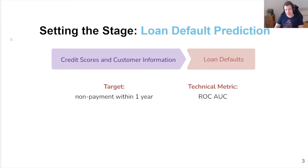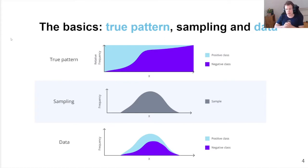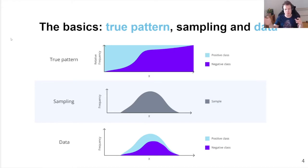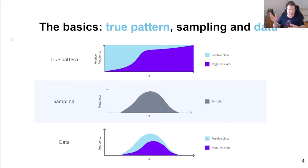Now let's define the two main ways that machine learning models can fail: concept drift and data drift. Before we do that, we need to look at what we're actually trying to do when we train our machine learning models. We start with the true pattern that exists in reality — for example, there is some variable x, and as x increases, the chance that a given data point belongs to the negative class increases in a sigmoidal fashion. We have this true pattern, some kind of relationship that might or might not be causal. Then we sample from this population according to that pattern, get our data, split it into training, validation, and test sets, maybe do some cross-validation, and use this data to develop and test our model.